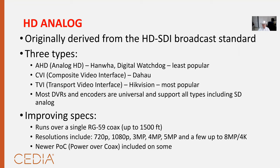HD analog is getting better. They've gotten coax runs out to about 1,500 feet — the original HD analog was only about 350–400 feet. Resolutions are getting up to around 4K, with most in the three to four megapixel range. They're also starting to allow you to push power over that single coax along with the digital signal. I think it's declining because everybody's moving toward IP cameras, but it's still a good solution for the right application.